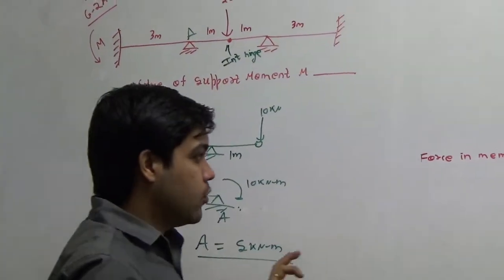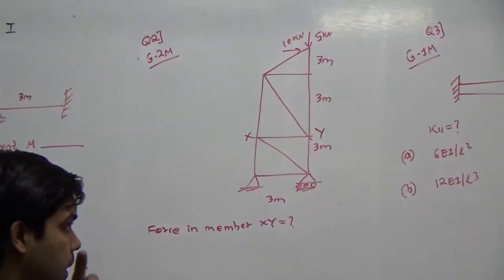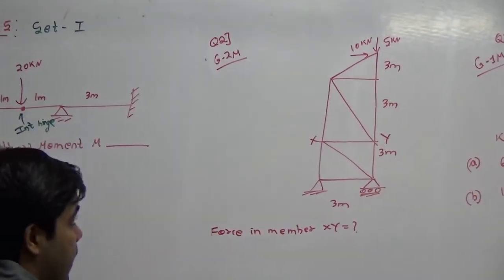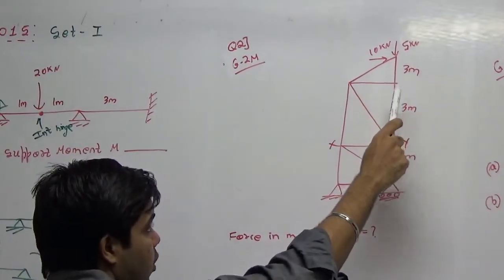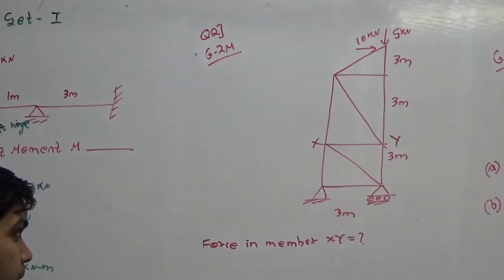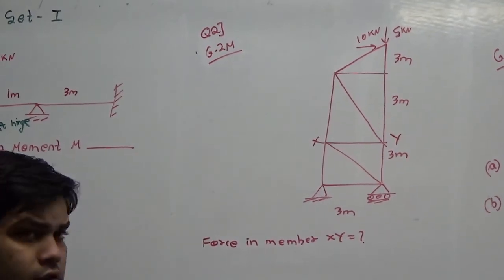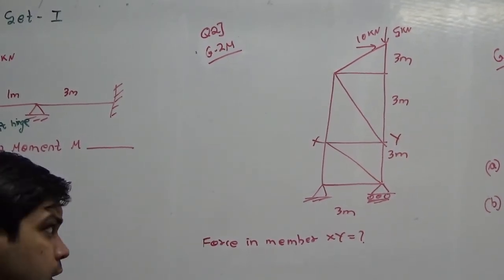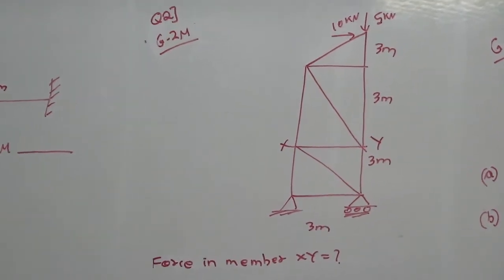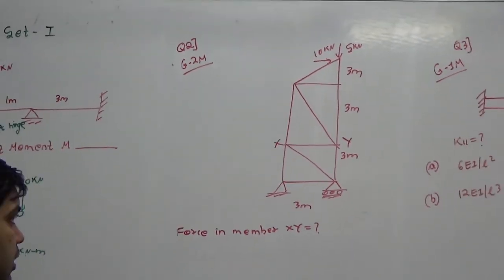This was the first question. In the second question, a truss is given. It has a 5 kN and 10 kN load at the top, and it is asked to find the force in member XY. This will be solved by both method of sections and method of joints — let me first do it by method of joints and then show a quick trick using method of sections.